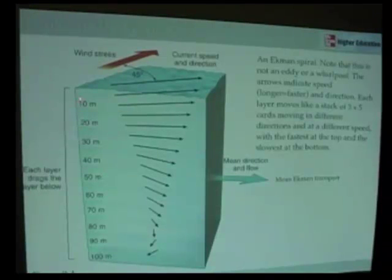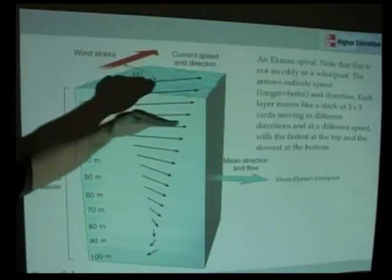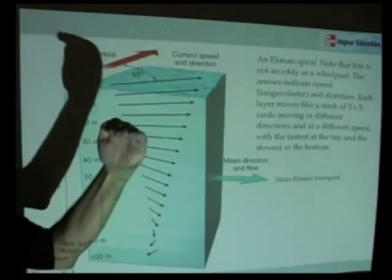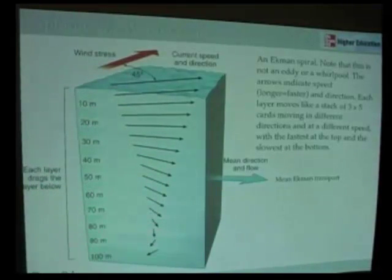Grab some 3x5 cards and convince yourself of that, and recreate this image. So you have a layer moving this direction, this one moving that direction, this one moving that direction, this one moving that direction, that direction, that direction, and so on.